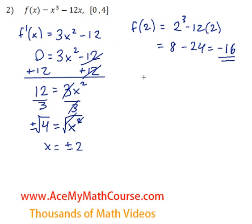Now all we have to do is calculate f of 0 and f of 4. Then we're going to compare all the values and see which value is the highest and which is the lowest.